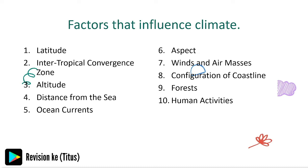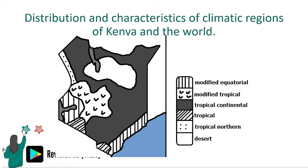Looking at the distribution within Kenya: we have the modified equatorial climate, the modified tropical climate, the tropical continental climate, the tropical climate, and the desert climate. This map is very key to what we are going to look at in detail. Please pause the video and try to map it out on a piece of paper.